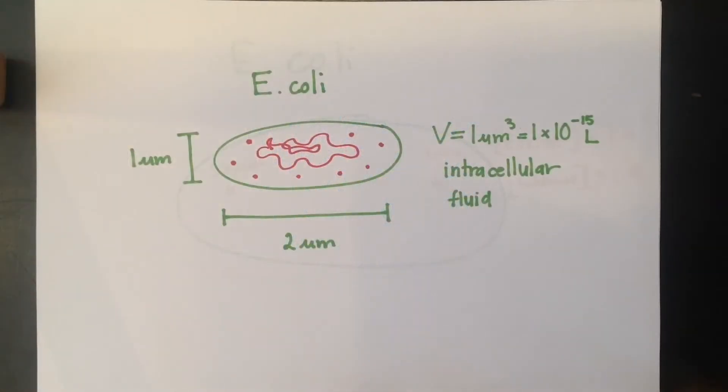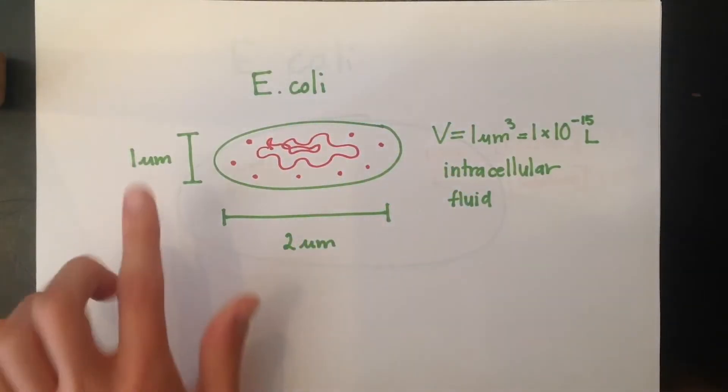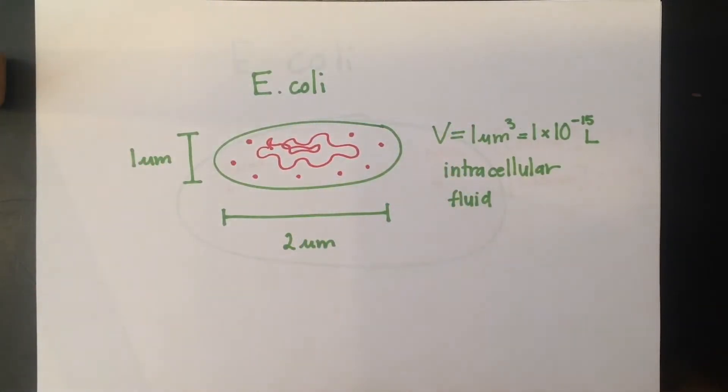So here's your average E. coli cell. It has a width of 1 micrometer and a length of 2 micrometers. And the volume is about 1 micrometer cubed, which has 1 times 10 to the negative 15th liters of intracellular fluid.